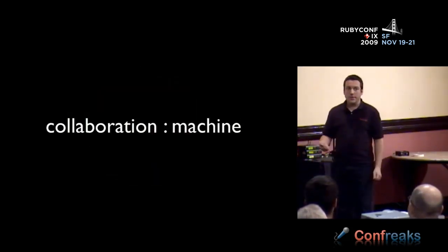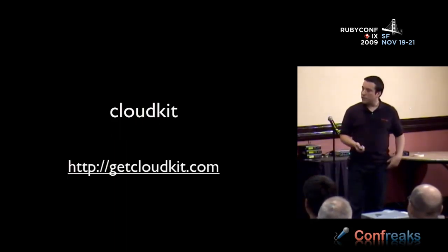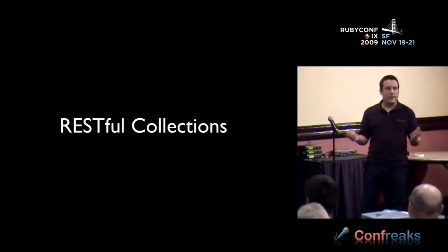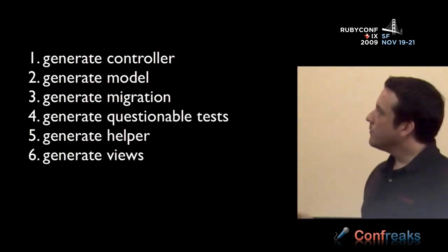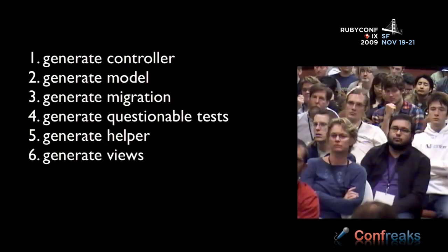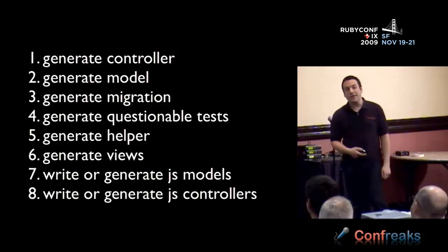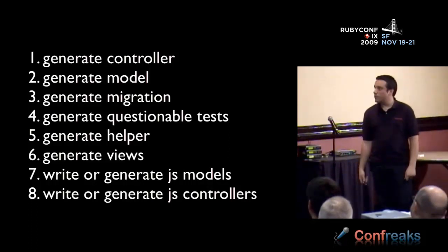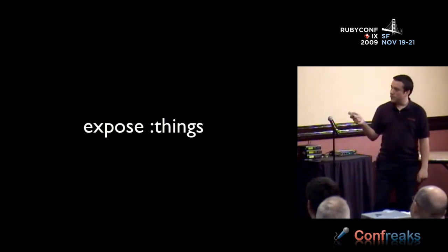We can extend this principle into machine-based collaboration as well, and this all funnels out of the DRY principle. This was my personal prompt to implement a framework called CloudKit, which you can find on GitHub. The idea is to mount RESTful collections without too much tedious repetitious work. In a Rails application, you'd typically generate a controller, model, migration, tests, a helper, and a set of views for all CRUD operations. If you're doing heavy JavaScript work in the browser, you end up writing or generating JavaScript models that match these. CloudKit abstracts all these principles — I was able to reduce it to one line of configuration in a Rack up file: just say 'expose things.'